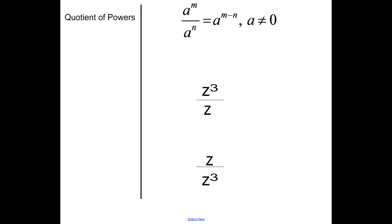Next is the quotient of powers. With a to the m divided by a to the n, you subtract your exponents — and they must have the same bases. So let's look at z to the 3rd over z. There's no written exponent, but it's really z to the 1st. So z to the 3rd over z to the 1st becomes z to the 3 minus 1, and the answer is z squared.